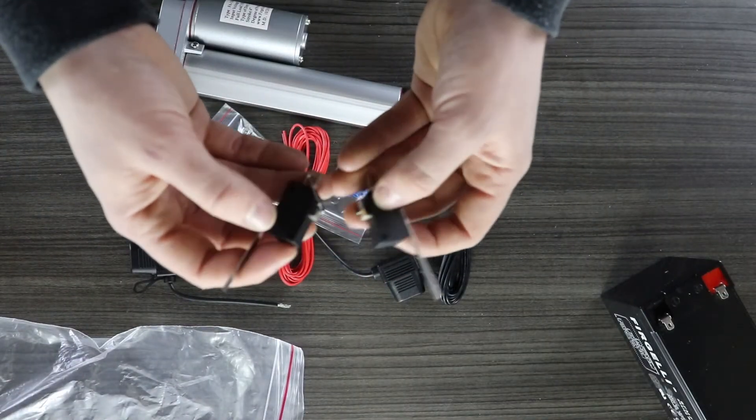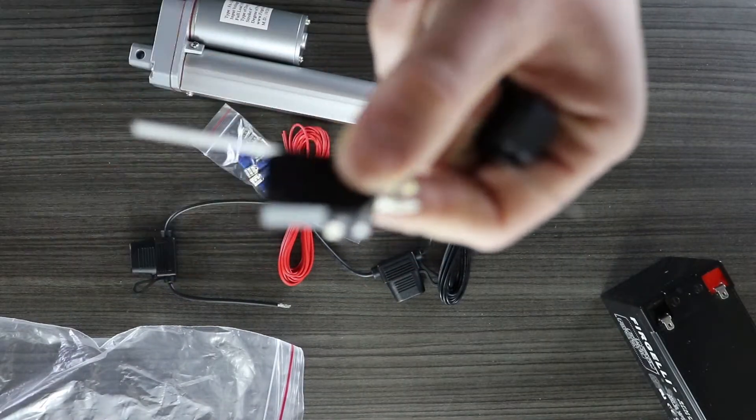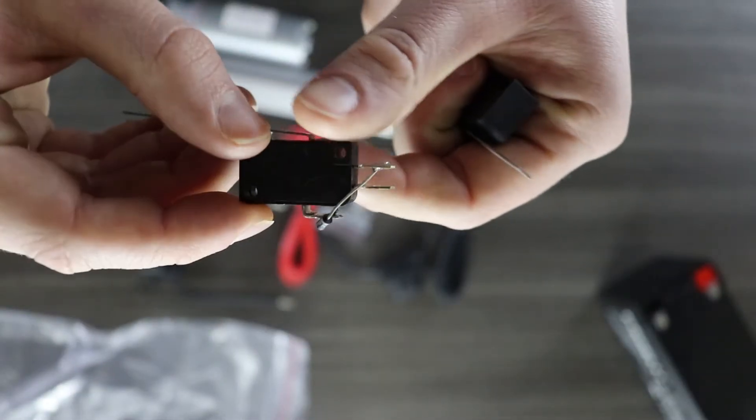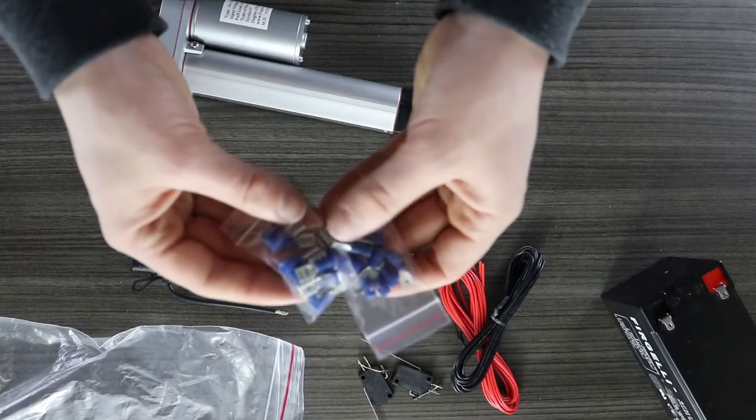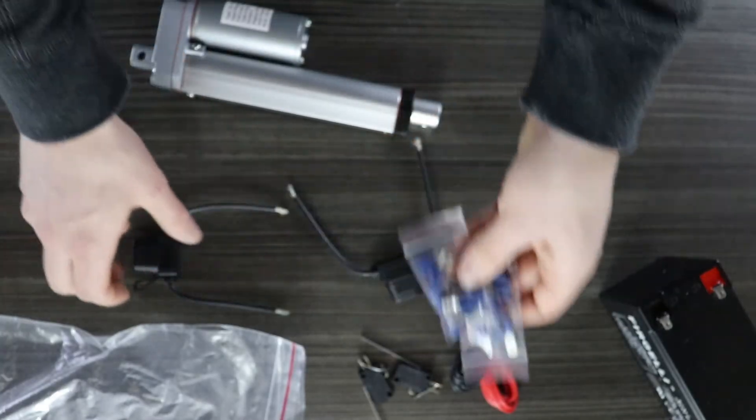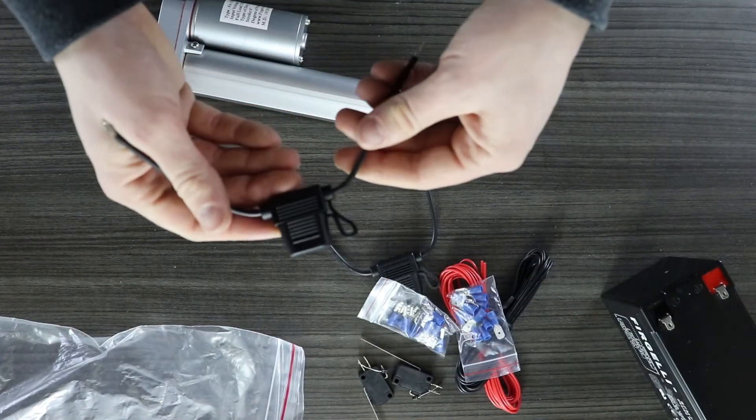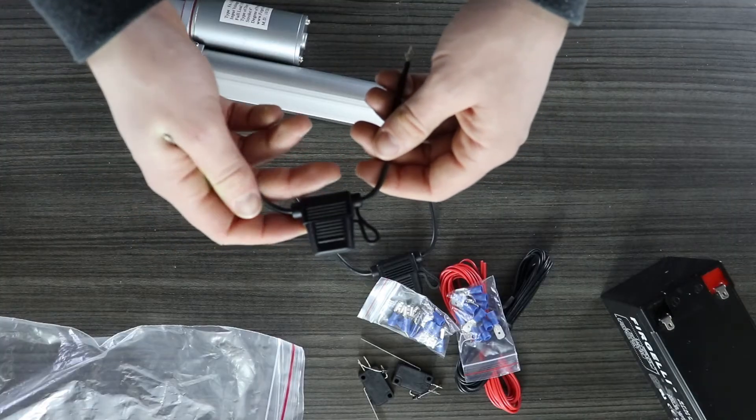It comes with two limit switches with a diode soldered across the end. It comes with some hook-up wire and also some spade connectors. We also include two optional fuses if you want to protect your actuator further.